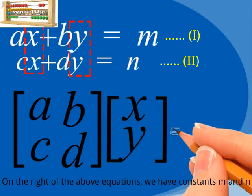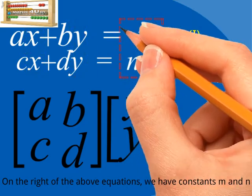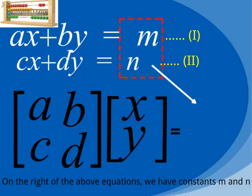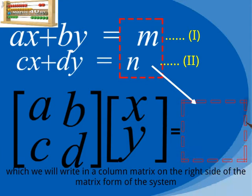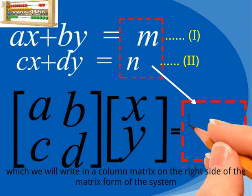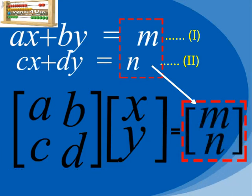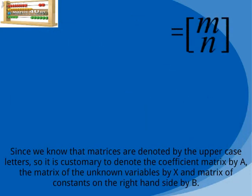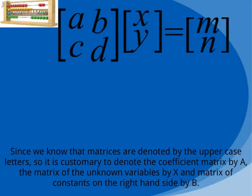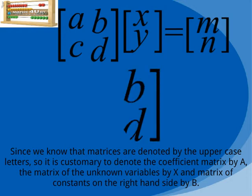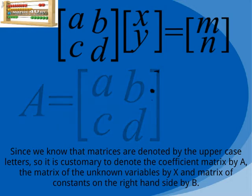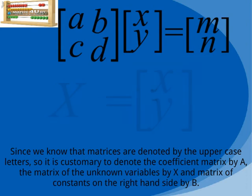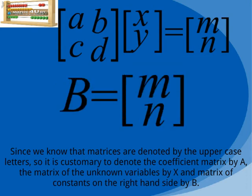On the right of the above equations we have constants m and n, which we will write in a column matrix on the right side of the matrix form of the system. Since matrices are generally denoted by uppercase letters, it is customary to denote the coefficient matrix by A, the matrix of the unknown variables by X, and the matrix of constants on the right-hand side by B.